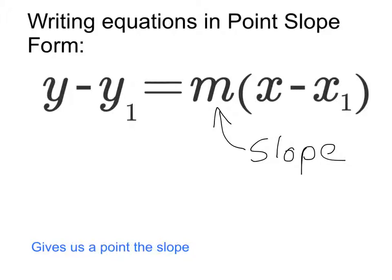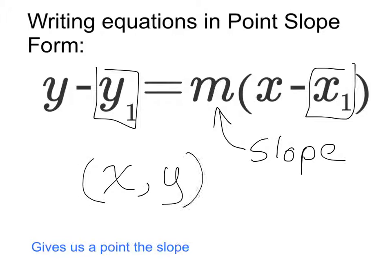The values of x₁ and y₁ make up the point. The thing to remember is that point-slope form gives us a point and a slope, and that's what we use to graph the line.